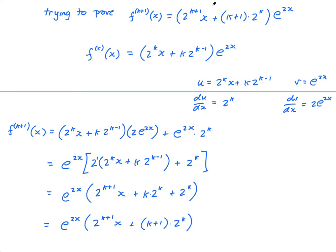I have my e^(2x), my 2^(k+1) · x, and then factoring out 2^k gives (k+1) times 2^k — close bracket. This is what I was trying to prove. This is why I like to write the target expression early: when you have that written down, you know what you're working towards. You're trying to turn this into this. If you don't write that down, I find it far more difficult.